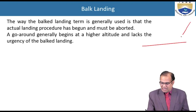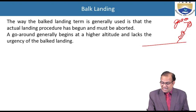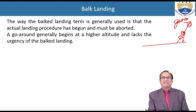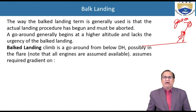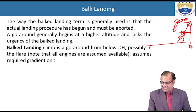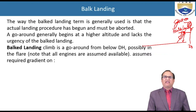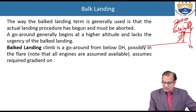If you take the decision to abort while still at approach altitude, that is a go-around; if your aircraft has descended to near the flare height, that is called the balked landing. A balked landing climb is a go-around from below decision height — possibly during the flare itself — with all engines assumed available.